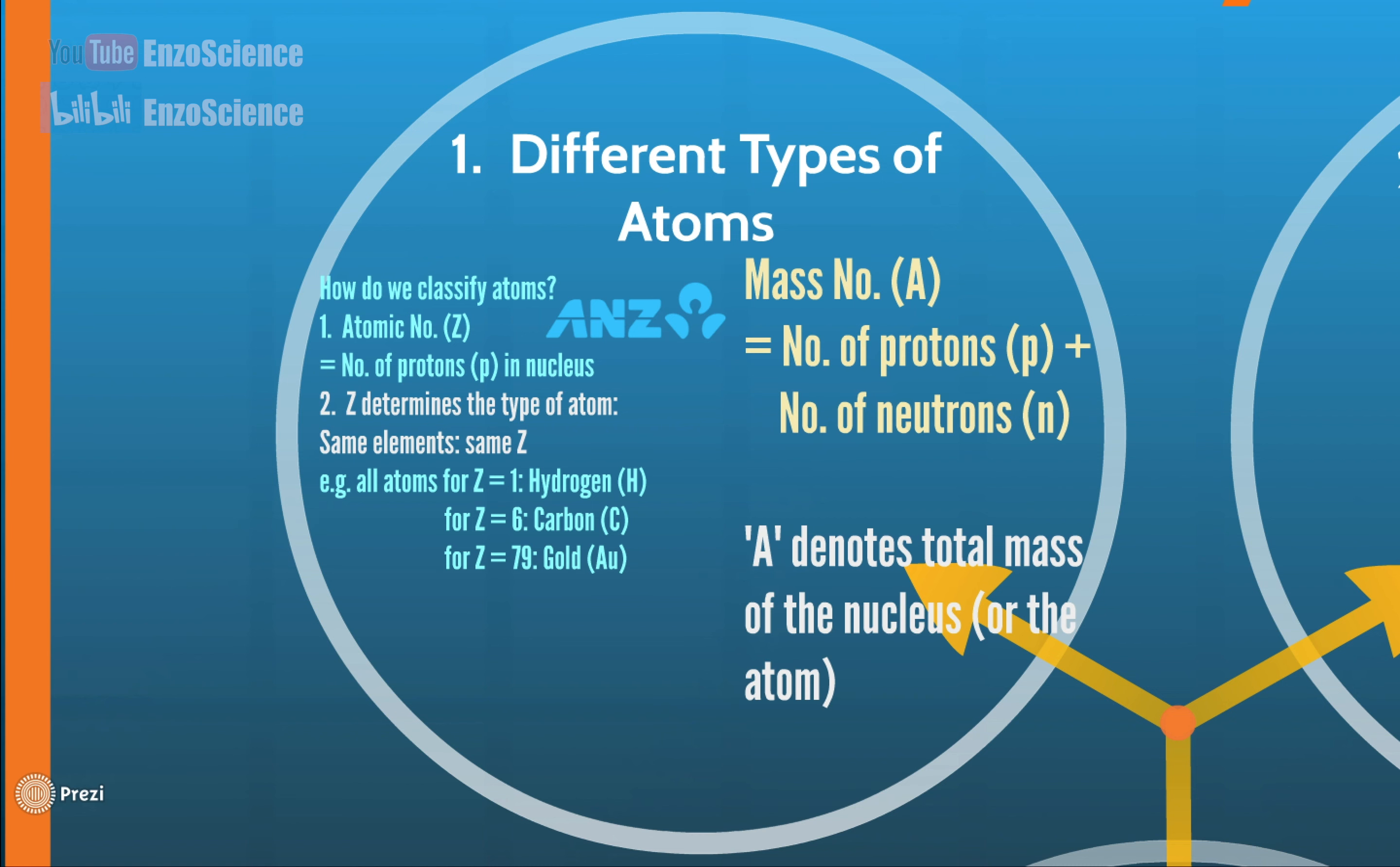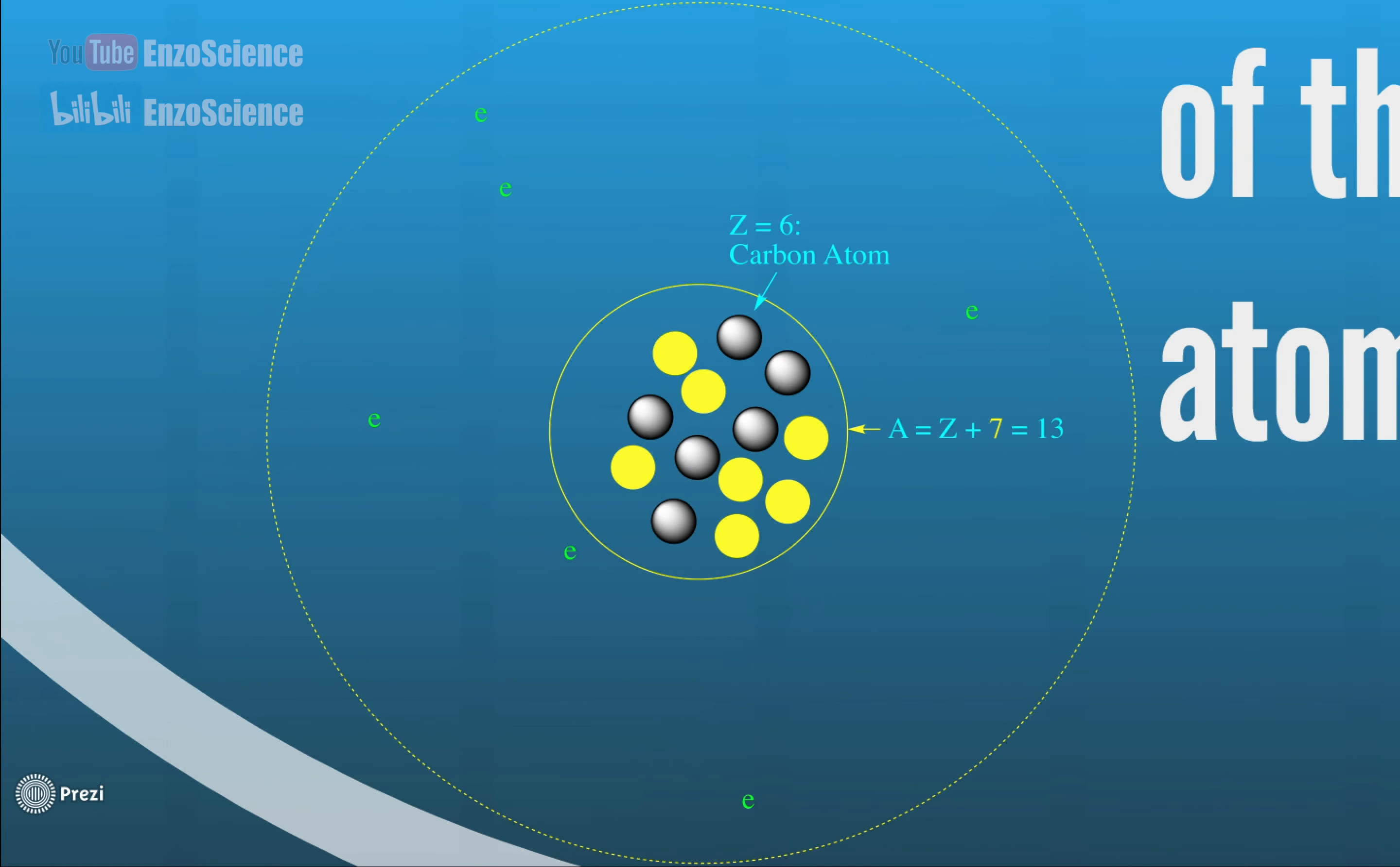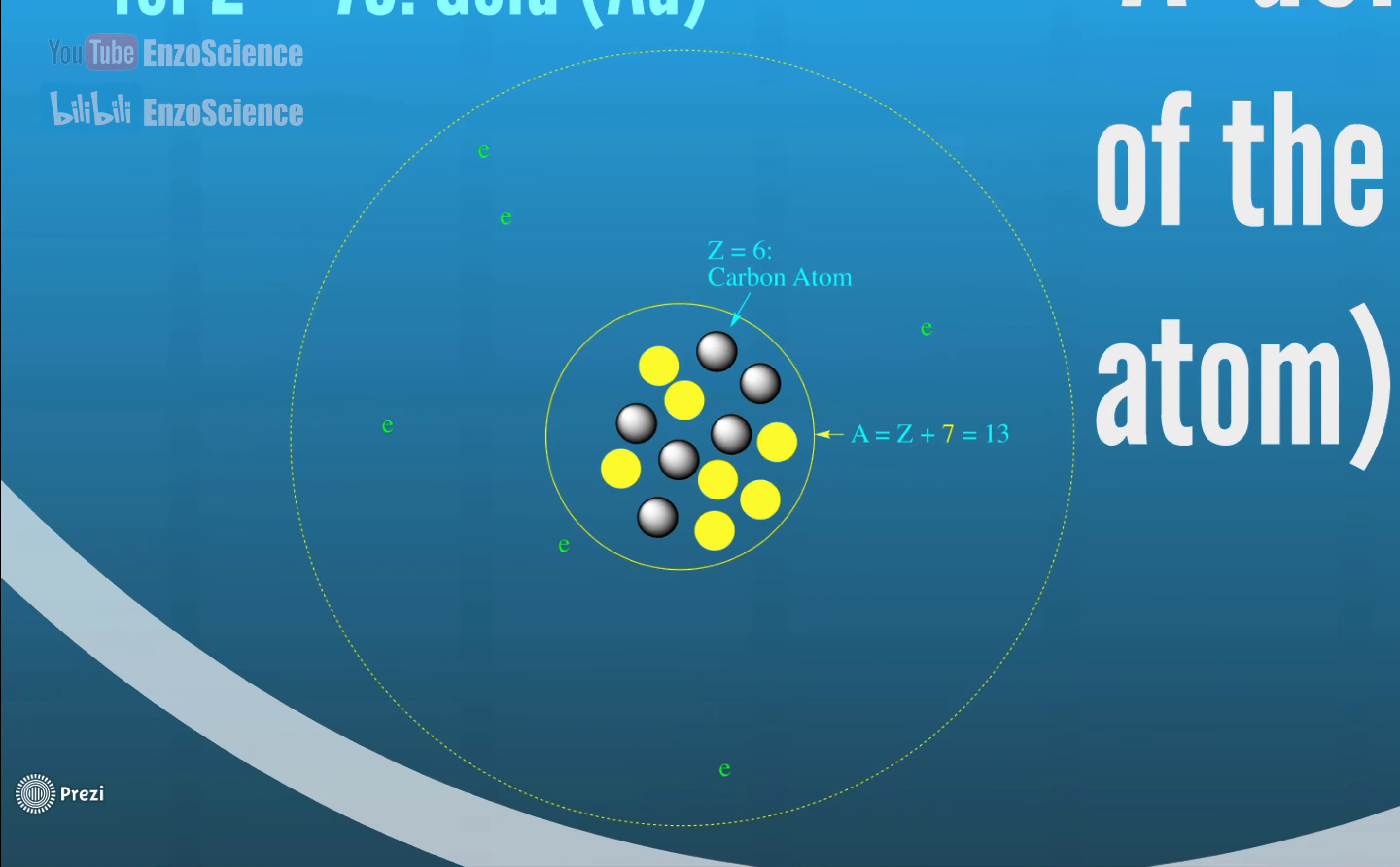Mass number is denoted by capital A, which is the sum of number of protons and number of neutrons. So capital A means total mass of the nucleus, or the atom. This picture shows there are 6 protons, which are black in the nucleus. So capital Z is 6, meaning this is a carbon atom. And there are 7 neutrons, which are yellow in the nucleus. So capital A equals Z plus 7. The capital A for this carbon atom is 13. It is a carbon-13 atom.